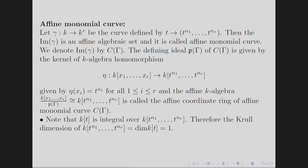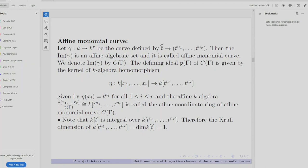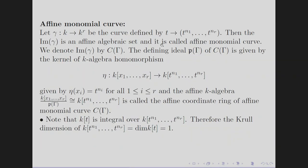An affine monomial curve is a curve parameterized by (t^n₁, ..., t^nᵣ) where n₁ to nᵣ generate a numerical semigroup. The image Cγ is called the affine monomial curve. The defining ideal of that curve is given by the homomorphism η, and the coordinate ring K[x₁,...,xᵣ] / P(Γ) is called the homogeneous coordinate ring of the affine monomial curve Cγ. The Krull dimension of this affine monomial curve is 1.